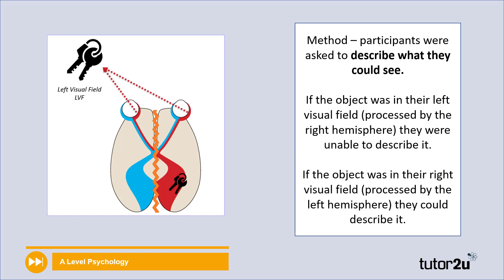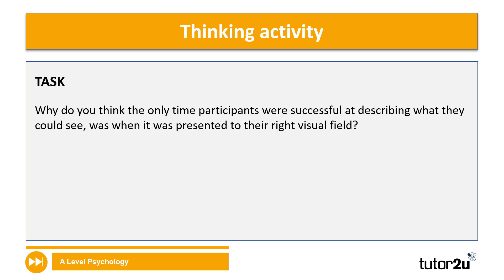We need to think about what this means. When the information was in the left visual field, they couldn't do it. That's telling us that the right hand side of the brain, the right hemisphere, might not be for our description skills. Because if it was, then the information in the left visual field would manage to reach the right side of the brain, and we would be able to describe what we've been asked to. So why do you think the only time participants were successful at describing what they could see was when it was presented to their right visual field?